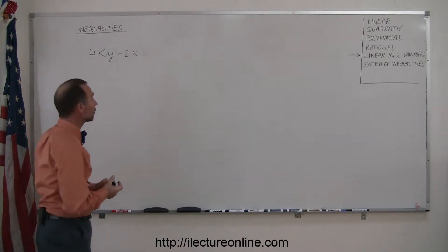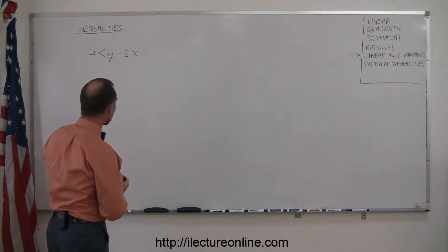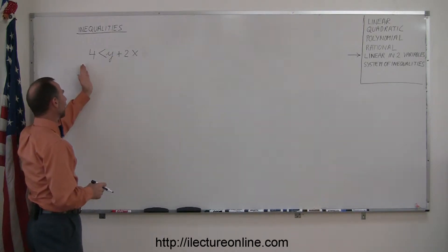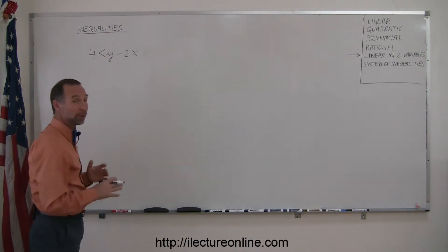Here's another example of how to solve a linear inequality in two variables. Now notice that it's not in your standard form. You would like the y on one side and everything else on the other side, so I'm going to rewrite this inequality.